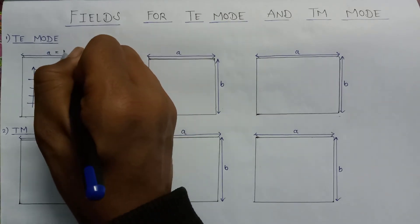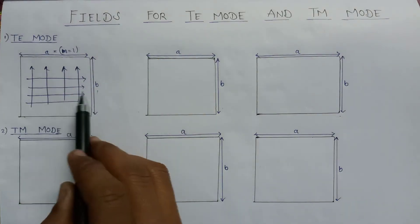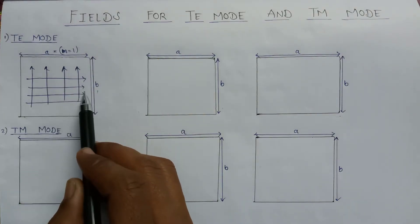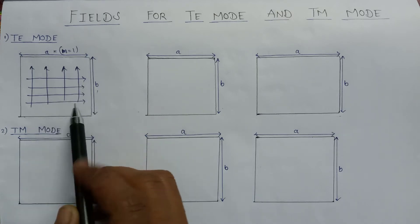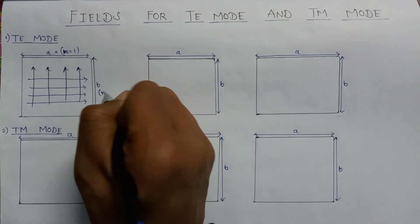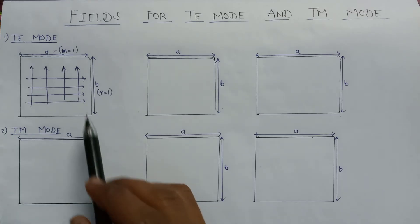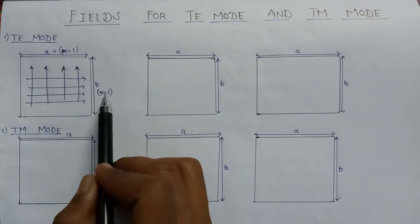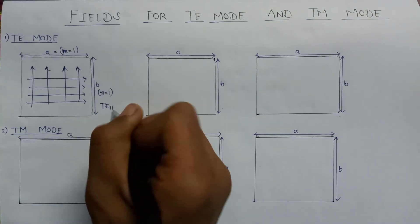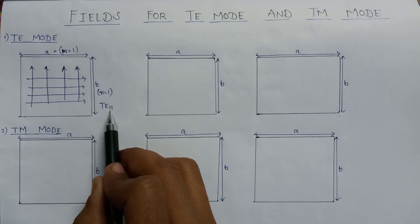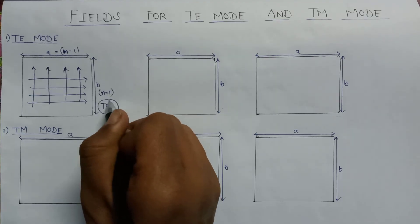So here there is only one variation with respect to A, so the value of M is equal to 1. Now we calculate the number of variations with respect to B. Since all the directions are the same, the value of N is also equal to 1. That's why, on the basis of the values of M and N, we can say that this is TE11 mode — we write the value of M first and then the value of N. So it is TE11 mode.